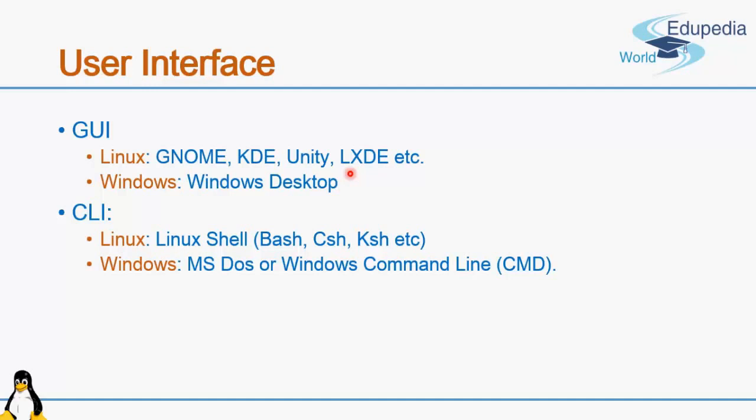For the command line interface, Linux again provides multiple options through the Linux shell, which comes in various versions such as Bash (Bourne Again Shell), C shell, K shell, and many more. Throughout this course, Bash shell will be used for learning Linux commands and scripting. For Windows, the primary CLI is Microsoft DOS. In newer versions of Windows, they have introduced Windows PowerShell, which is essentially an advanced version of DOS.